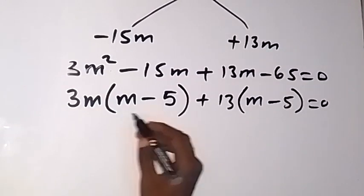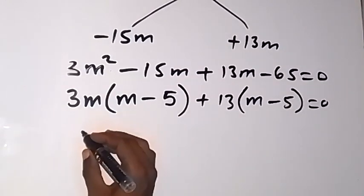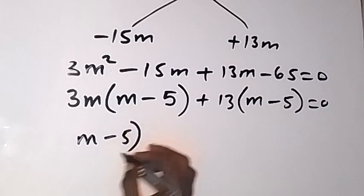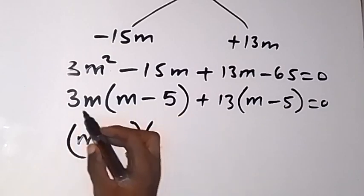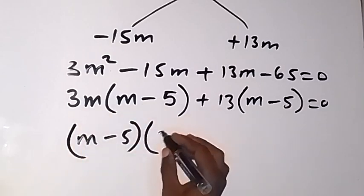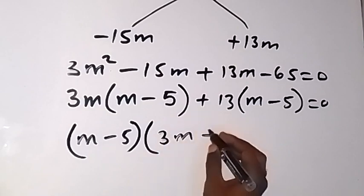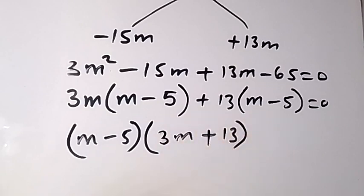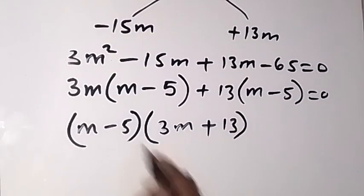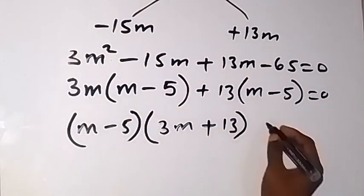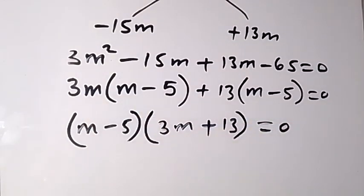When you look at this, you have the same thing inside the brackets. You can bring one of them out and say (m - 5), then combine with what you have here, that's (3m + 13). These two multiply and the result is zero.